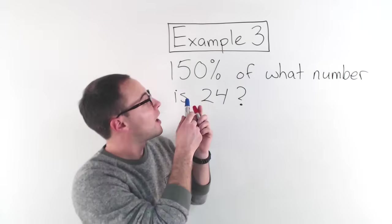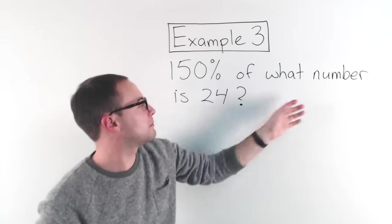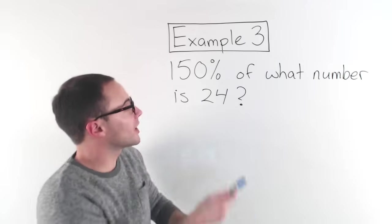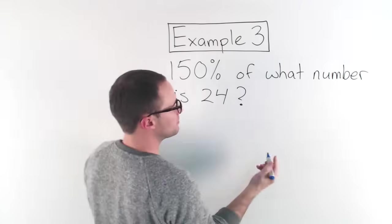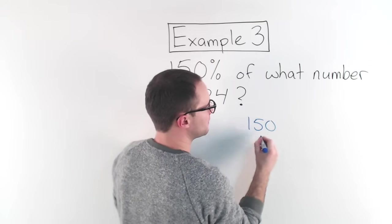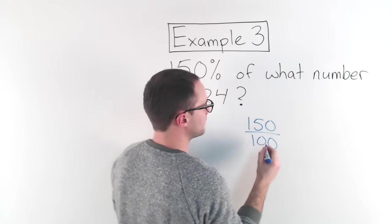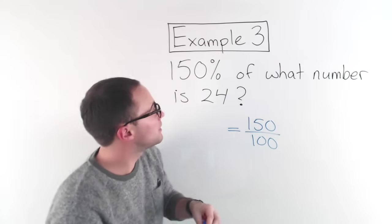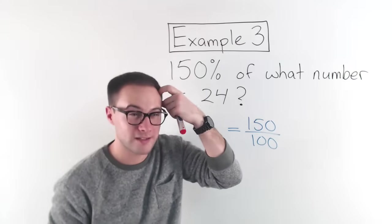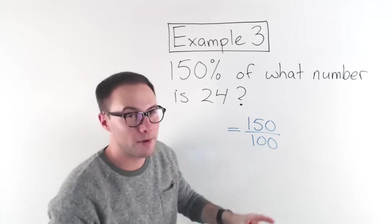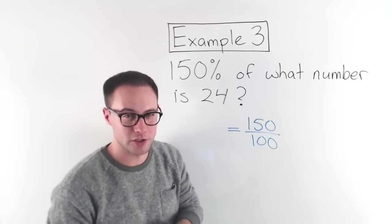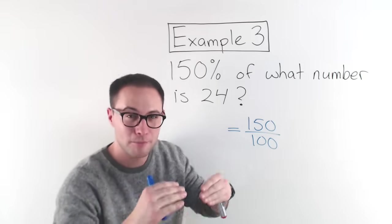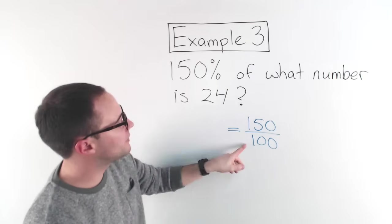Here's our last example. 150% of what number is 24? So again, I've got a percent. I'm going to start with that. 150%. That is 150 over 100. Equals. A common mistake. People see 150 and they think, oh, well that's greater than 100. So that should be in the denominator. But don't. Remember, for percents, your denominator is always 100. Right? Per cent. Per 100. So 150 over 100.